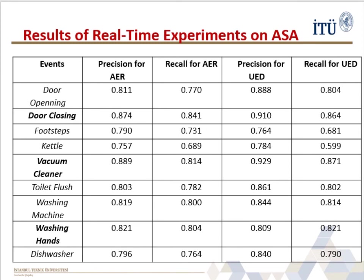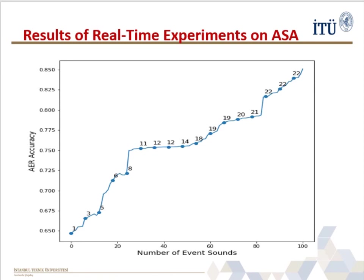The results of the real-time auditory scene analysis experiments are shown in the table, including precision and recall values of acoustic event recognition and unknown event detection. The acoustic events with the best precision and recall values are closing door, vacuum cleaner, and washing hands. However, the worst result is obtained on the sounds of kettle. In a continual learning experiment, the acoustic event recognition performances are shown in a figure. The number of distinct events is indicated on the recognition accuracy line, representing the number of patterns detected as unknown and adapted into the hierarchical HMM at each point. While the number of unknown events increases, the acoustic event recognition accuracy also improves. An average of between 25 and 35 different events are detected in various experiments in which 100 event sounds with 12,901 audio patterns are introduced.